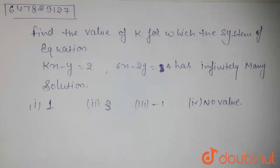Hello friends, the question given is: find the value of k for which the system of equations kx minus y equals 2, 6x minus 2y equals 4 has infinitely many solutions. Options given are 1, 3, minus 1, and no value.